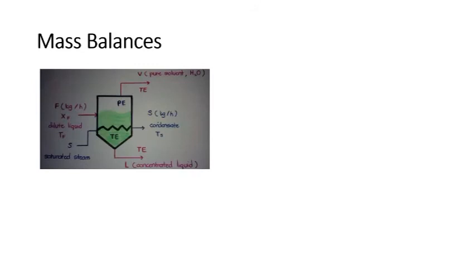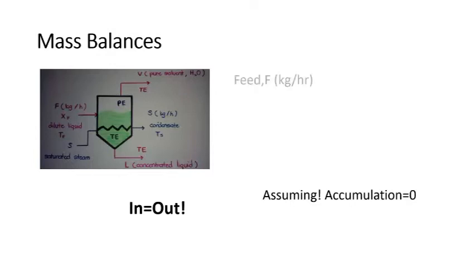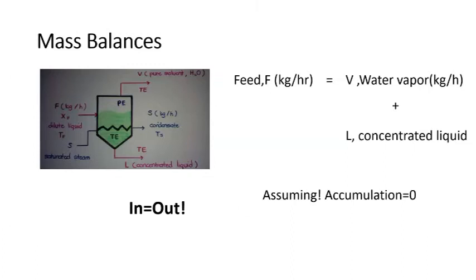For the mass balance equations, as you can see in the diagram, the feed goes into the evaporator and produces pure solvent or water vapor and the concentrated liquid, which is the desired product. By assuming that the accumulation is equal to zero and what goes in equals what goes out from the evaporator, the feed flow rate, or mass flow rate, must be equal to the flow rate of the water vapor plus the flow rate of the concentrated liquid. This indicates a mass balance equation.